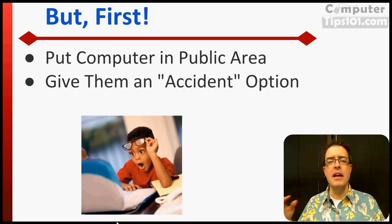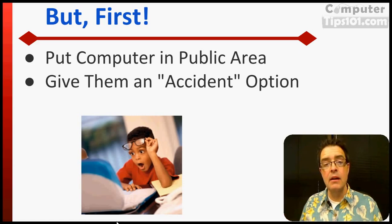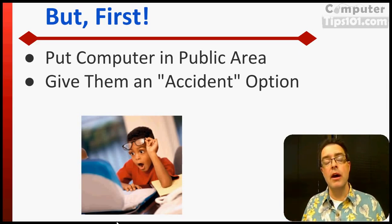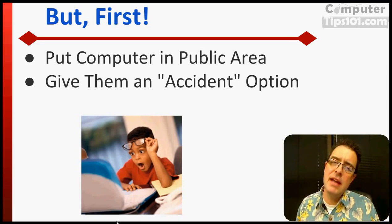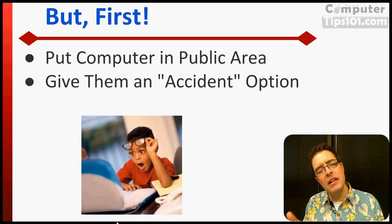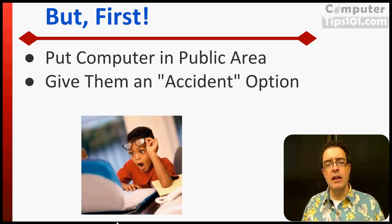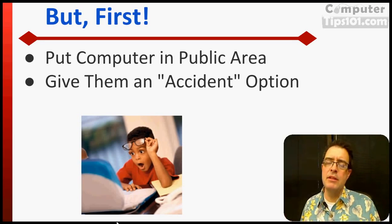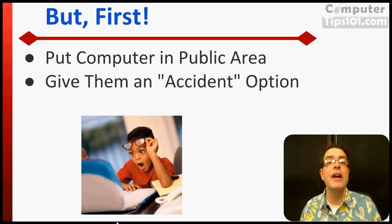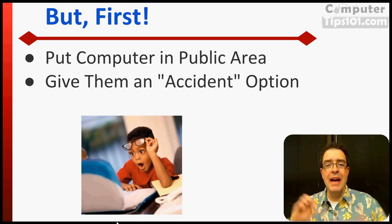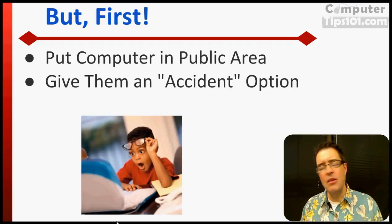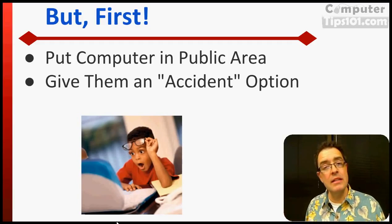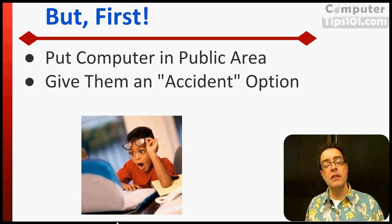In other words, it's happened to all of us — we're typing along, we click on something or type a wrong address, and we accidentally, legitimately, accidentally go to an inappropriate site. This gives them an out. Just tell them: we know accidents happen, so if you accidentally go to an inappropriate site, as long as you come tell us directly, you're not in trouble. Give them an out, because a lot of times if a kid accidentally goes to a site like that, they freak out, think they've done something wrong, try to close it and hide it, and they're all nervous. They don't need that. So give them an out — let them know that accidents happen, and as long as they come get you immediately, they're not in trouble.